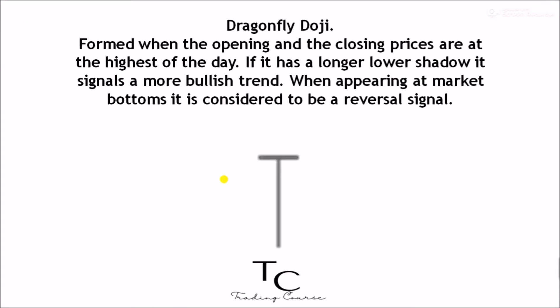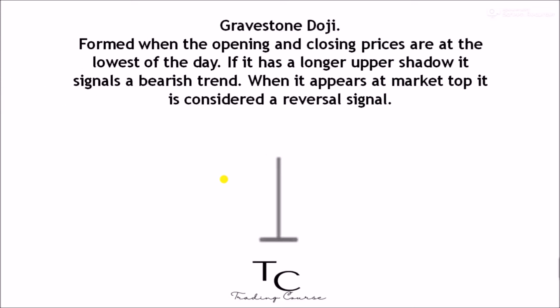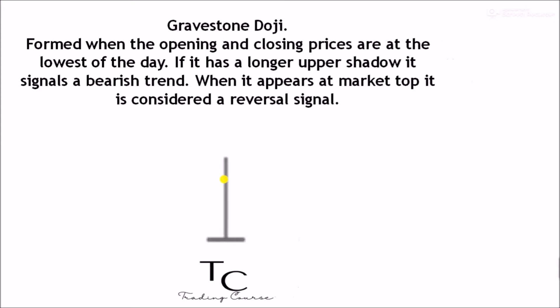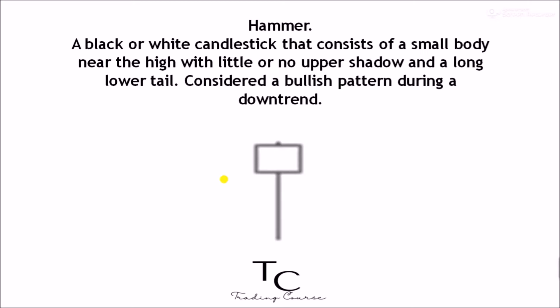Dragonfly doji — formed when the opening and the closing prices are at the highest of the day. If it has a longer lower shadow it signals a more bullish trend. When appearing at market bottoms it is considered a reversal signal. Gravestone doji — formed when the opening and closing prices are at the lowest of the day. If it has a longer upper shadow it signals a bearish trend. When it appears at market top it is considered a reversal signal. Hammer — a black or white candlestick that consists of a small body near the high with little or no upper shadow and a long lower tail.